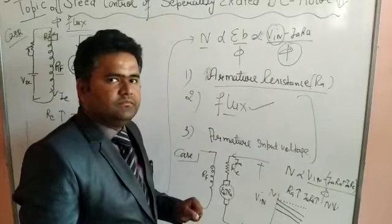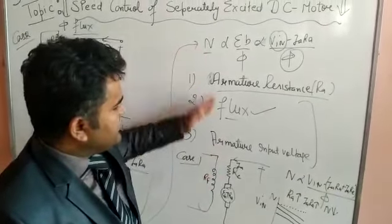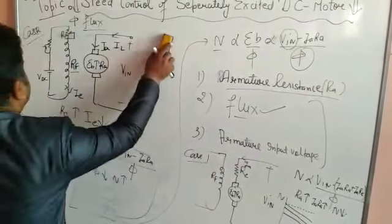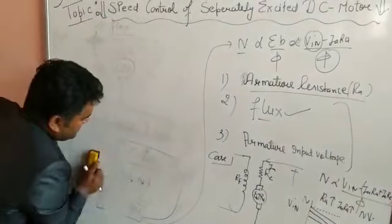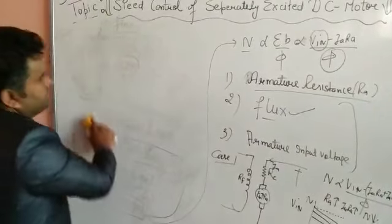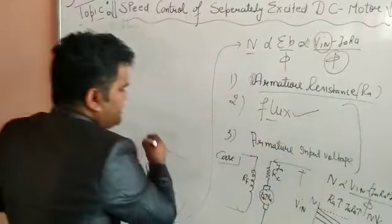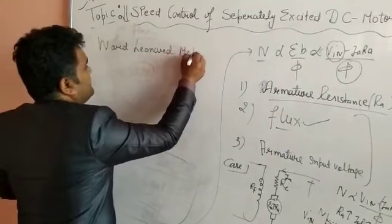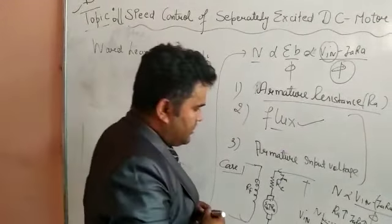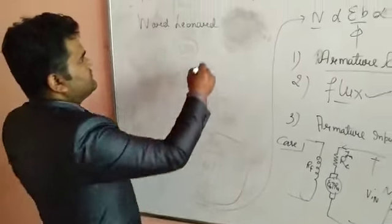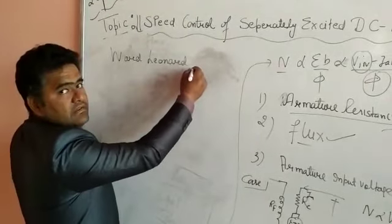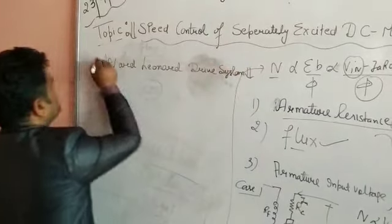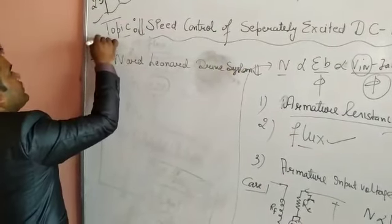Now the third case: speed can be changed by changing the input voltage of the armature. This can be discussed using the Ward-Leonard method — also called the Ward-Leonard drive system. This is the third method of changing the voltage V_in.